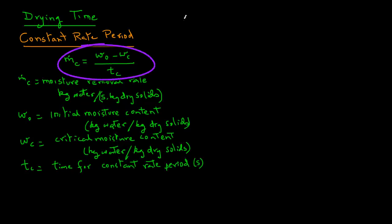tc is the time for the constant rate period, and that will be in seconds. The equation essentially represents the change in moisture content from initial to the critical moisture content divided by the time, which gives us the moisture removal rate.